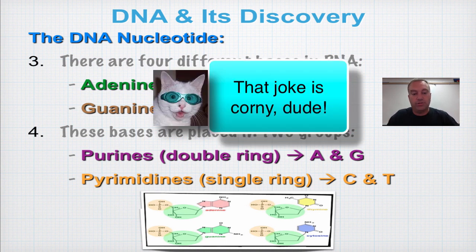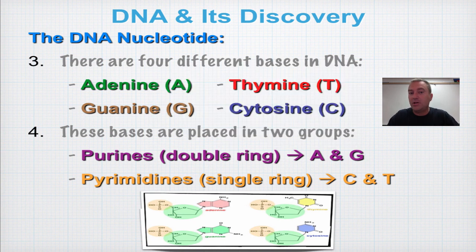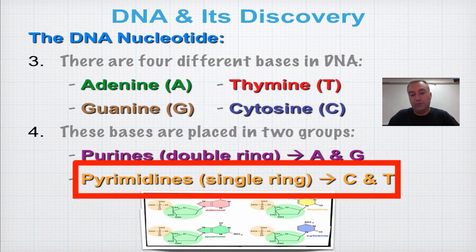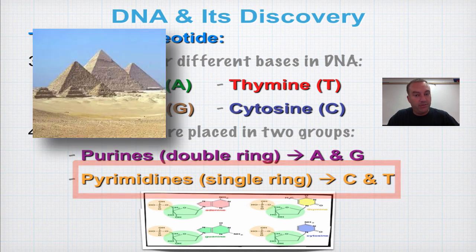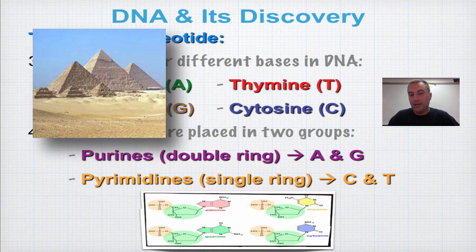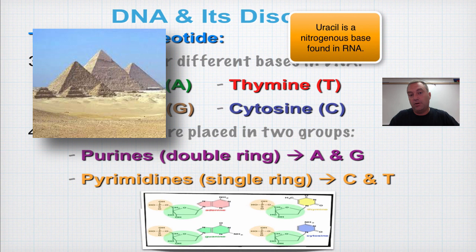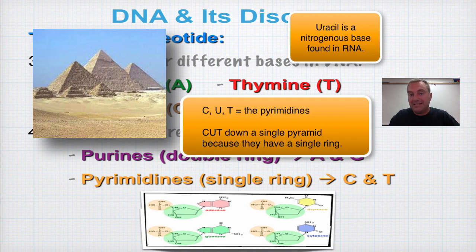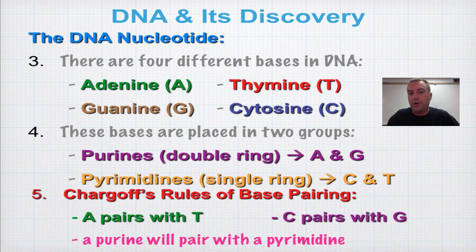The pyrimidines are single-ring bases: cytosine and thymine — C and T. Pyrimidines remind me of the pyramids in Egypt. There's also another base we'll talk about when we get to RNA: uracil. A helpful mnemonic is 'cut down the pyramids' — C, U, T — the three pyrimidine bases. Now you know the difference between purines and pyrimidines.